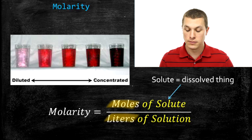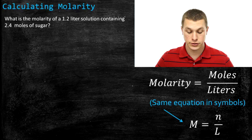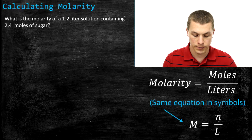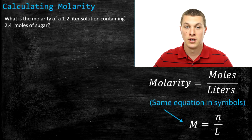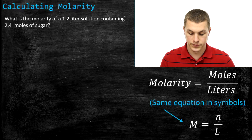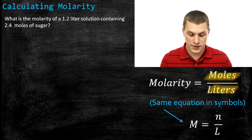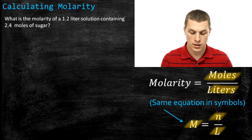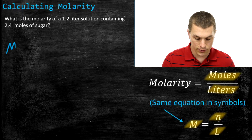Let's look at some problems where you calculate molarity. This is the most basic type: it gives you the volume of your solution and the quantity of stuff you're dissolving, and all your units are correct from the start. The problem says: what is the molarity of a 1.2 liter solution containing 2.4 moles of sugar? We already have liters and moles, so we can plug directly into our equation. The equation is moles divided by liters. In symbols: M = N/L, where M is molarity, N is moles, and L is liters.